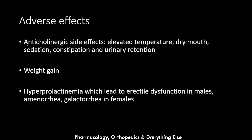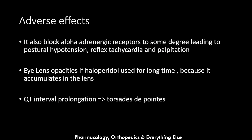Haloperidol also leads to anticholinergic side effects such as elevated temperature, dry mouth, sedation, constipation, and urinary retention. It leads to weight gain and hyperprolactinemia due to inhibition of the tuberoinfundibular pathway, which can cause erectile dysfunction in males and amenorrhea or galactorrhea in females. It blocks alpha-adrenergic receptors, leading to postural hypotension, reflex tachycardia, and palpitations. With long-term use it may lead to eye lens opacities due to accumulation in the lens, and it may cause QT interval prolongation, which can lead to torsades de pointes arrhythmia.